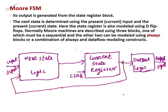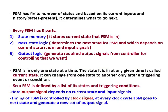So what is this Moore FSM? Here the output is generated from the state register block. This is the block diagram for the Moore FSM. Every FSM has three parts: state memory, next state logic, and output logic. I have covered this in my last lesson, so please go and watch that video first.